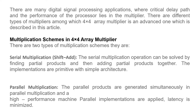In a 4 by 4 array multiplier, there are two types of multiplication schemes: serial multiplication and parallel multiplication. In serial multiplication, the operation is solved by finding partial products and then adding them together; the implementations are primitive with simple architecture. In parallel multiplication, partial products are generated simultaneously, high performance is achieved, and latency is minimized.